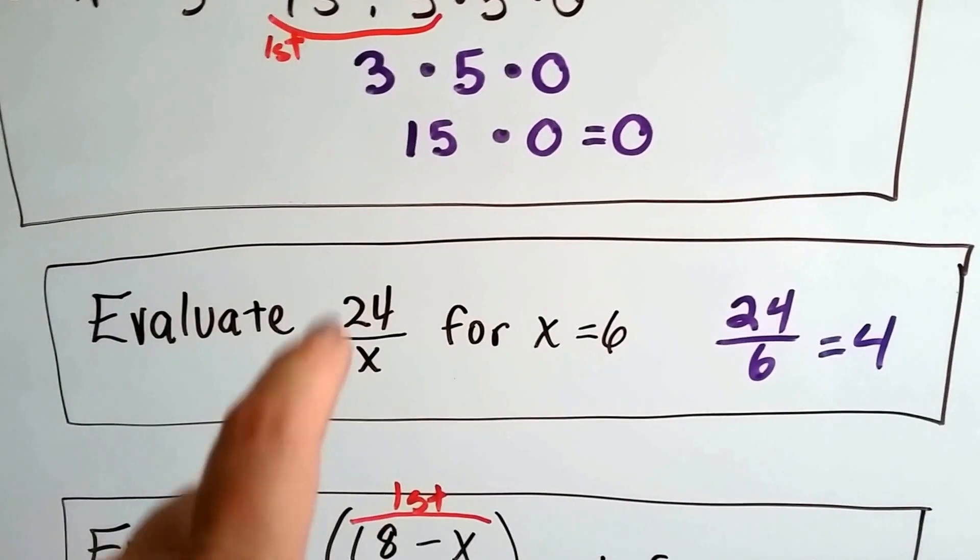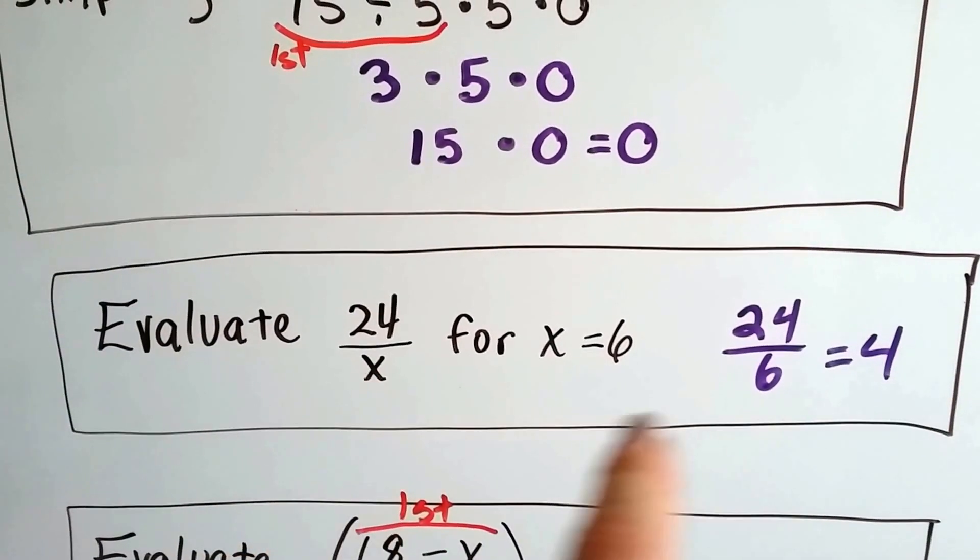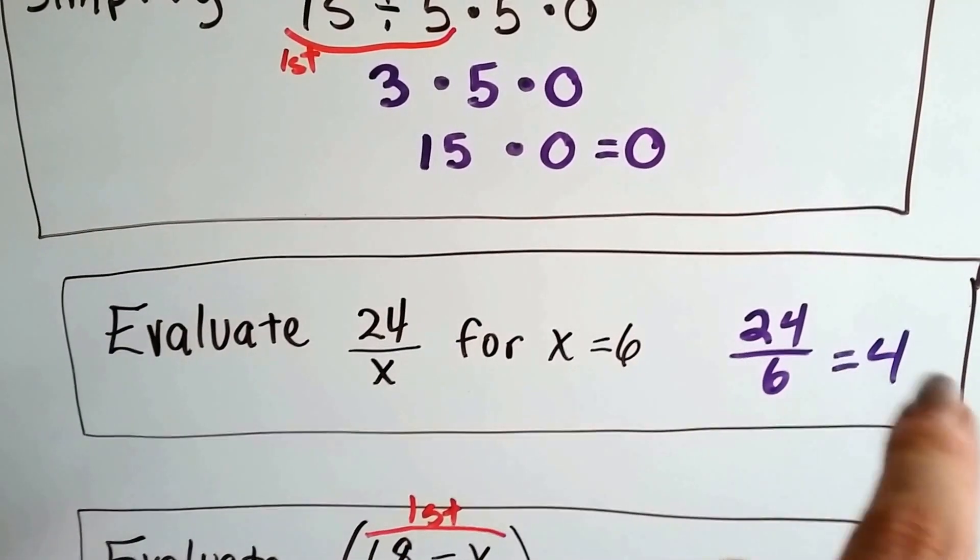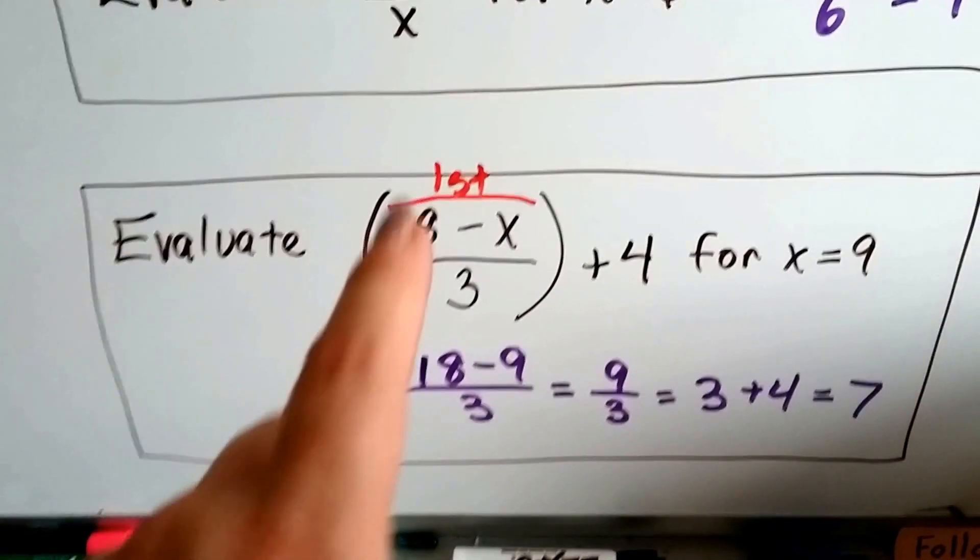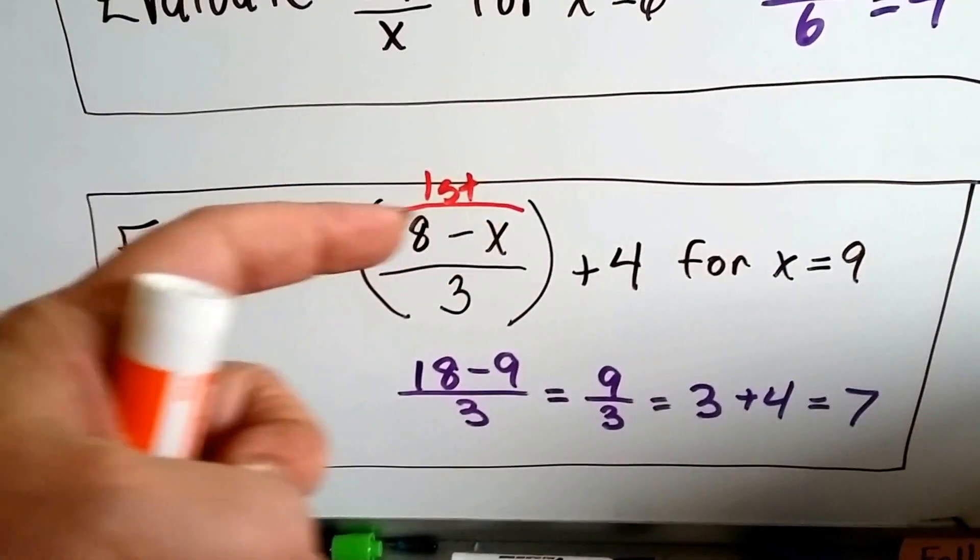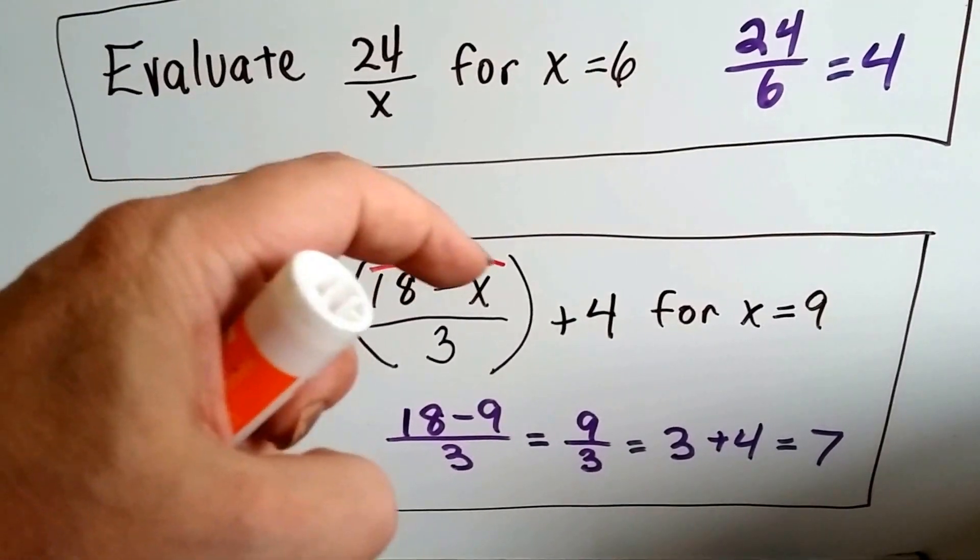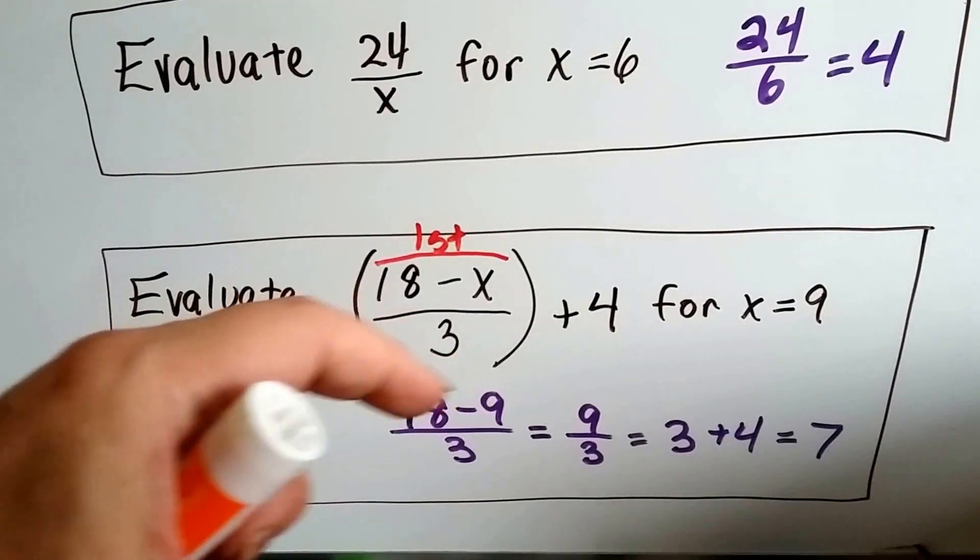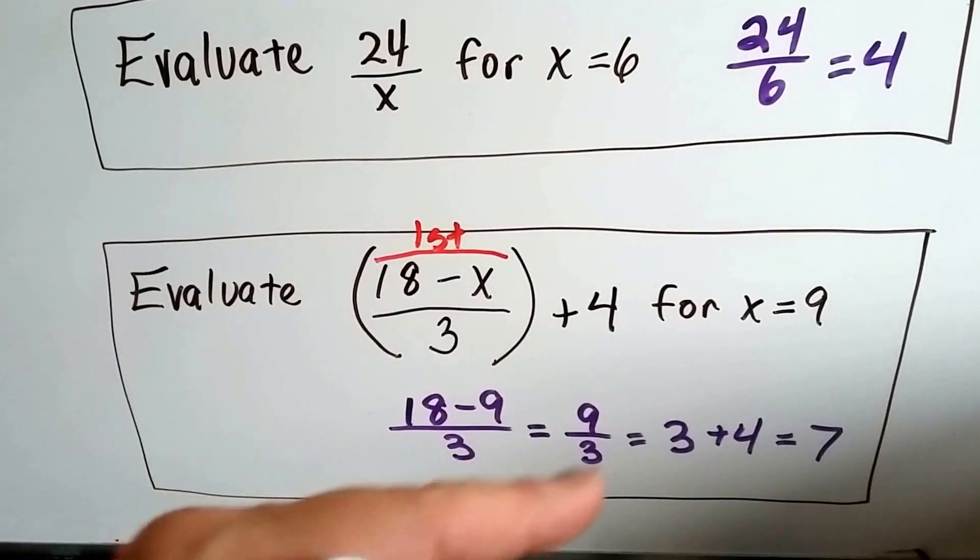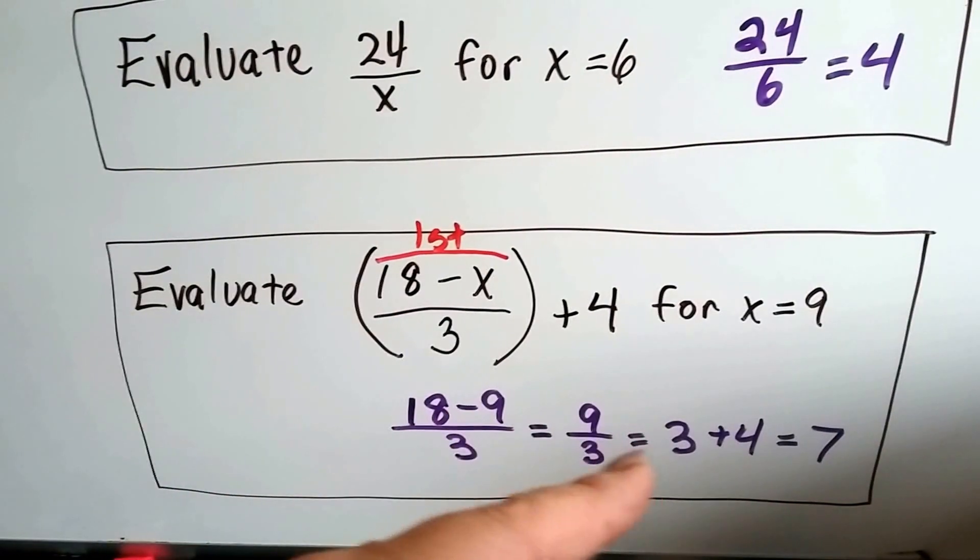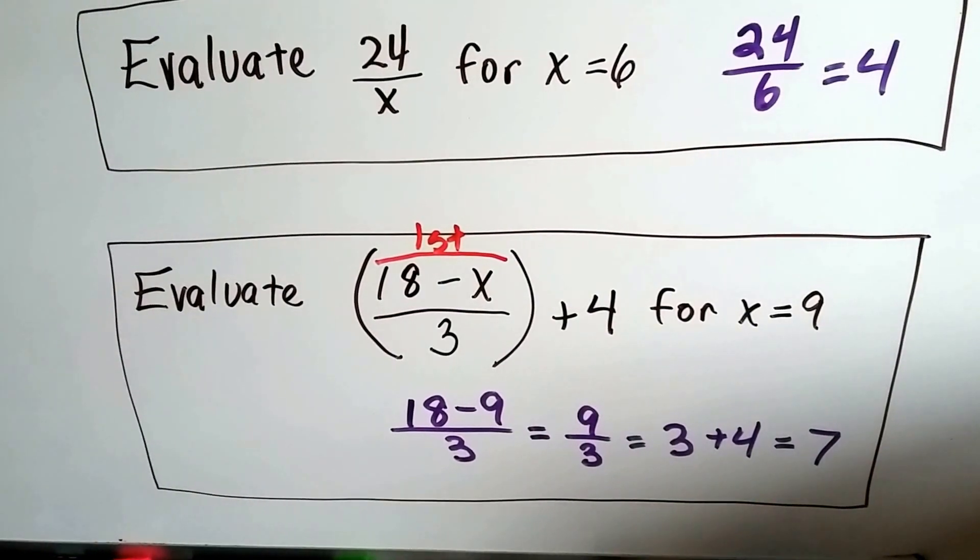If we need to evaluate 24 over x and x equals 6, we just plug the 6 in where the x is, and we get 24 over 6. 24 divided by 6 is 4. If we see this one, we see parentheses. We're going to do the numerator first. If x equals 9, we're going to plug that in where x is. 18 minus 9 is 9. We write it over the 3. 9 over 3, 9 divided by 3 is 3. Now we add the 4. 3 plus 4 is 7.